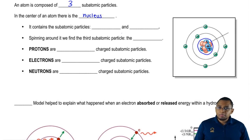The nucleus, being in the center, contains two of the three subatomic particles. It contains the protons and the neutrons, and spinning around our nucleus, we find the third subatomic particle, our electrons.